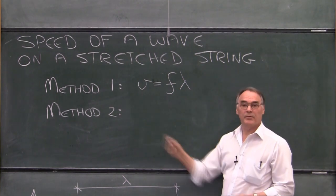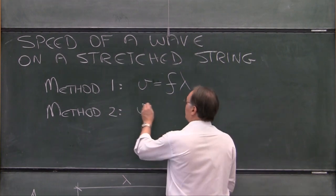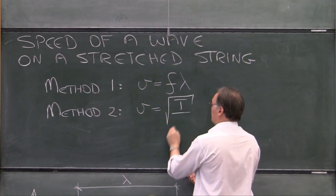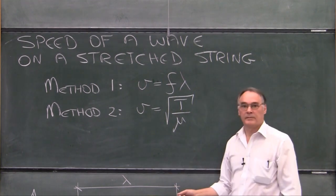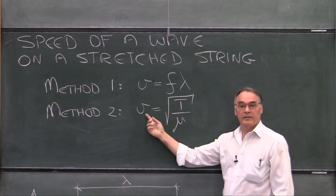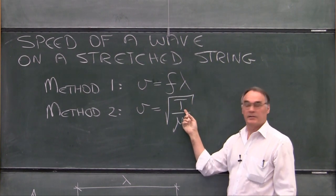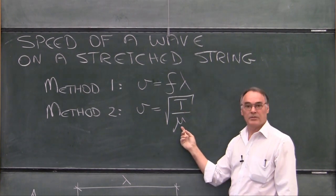And in the second method, we're going to use the relationship where the speed is equal to the square root of the tension in the string divided by the mass per unit length of the string.